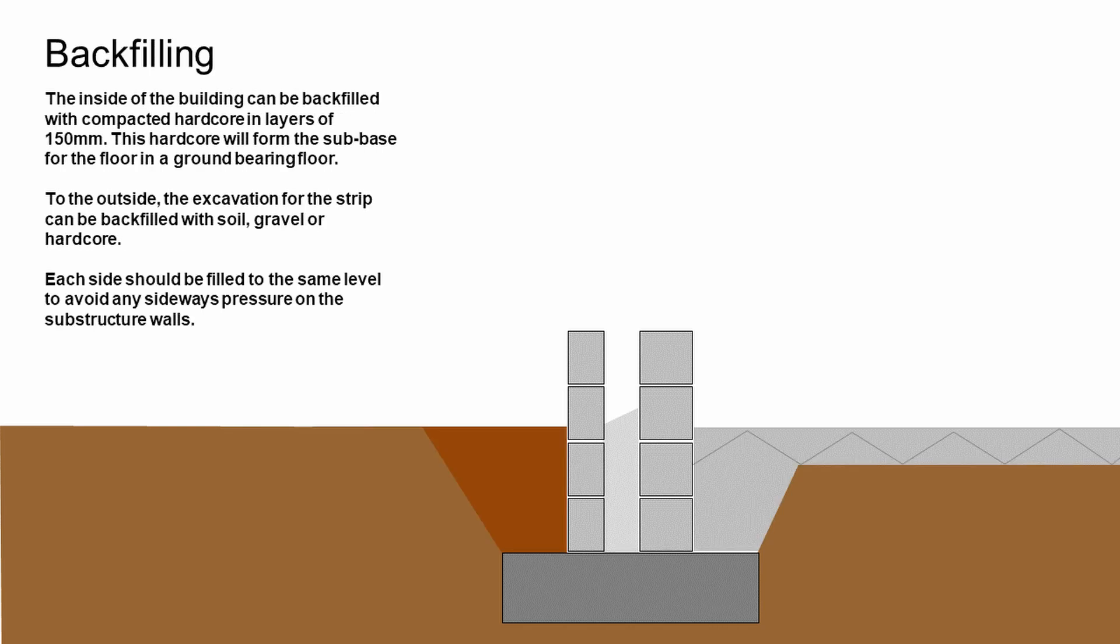Following this, we can backfill to either side. Inside the building, we'd be backfilling with 150 millimeters of hardcore or MOT type 1, and that would be well compacted. If we needed more than 150 millimeters, we'd build it up in layers of 150 millimeters maximum at a time. The outside of the building would be backfilled using soil or gravel or hardcore, depending on the use of the space outside the building. It's important that we build these layers up in tandem with each other so there's no possibility of sideways pressure being put on the wall.